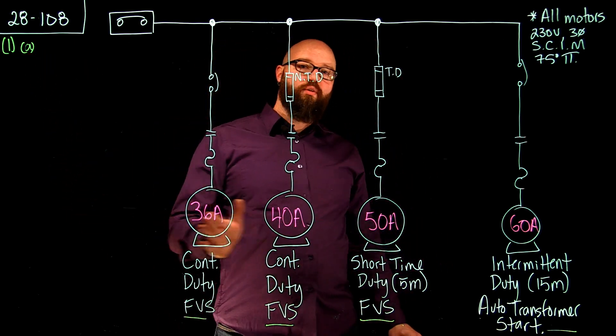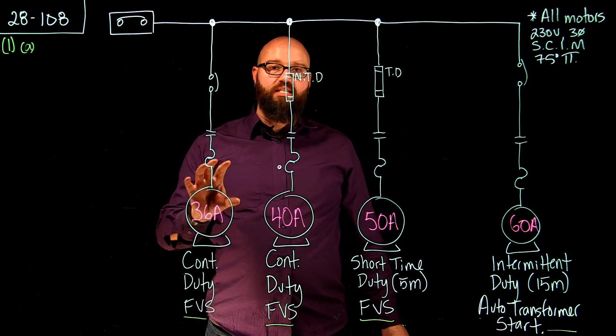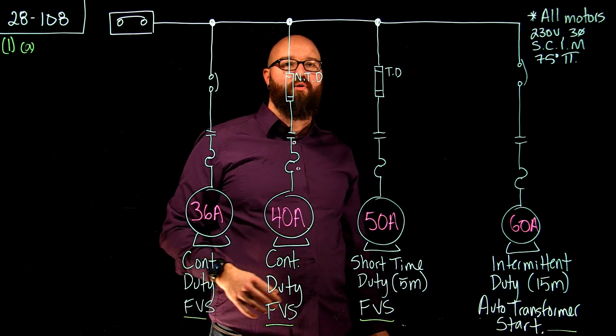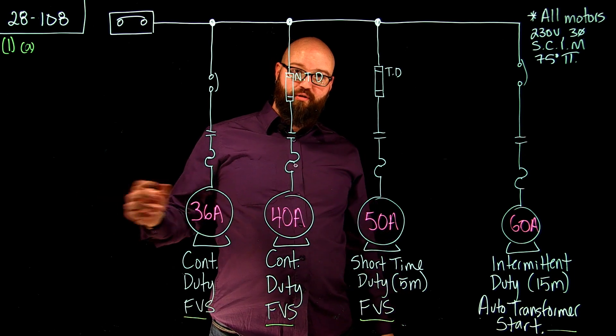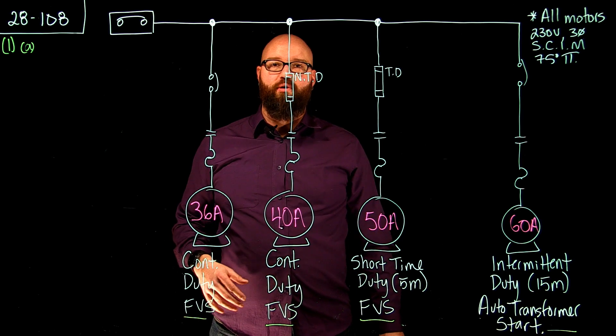Item A talks about only continuous motors and what it breaks it down into is we're going to take the highest FLA of all the continuous motors and then we're going to multiply that by 125% and then add the rest of the continuous duty rated motors.